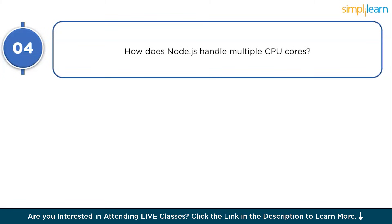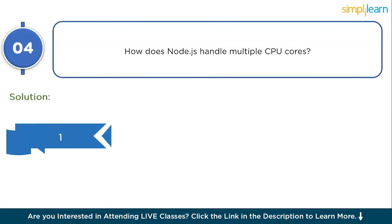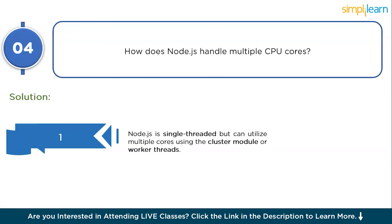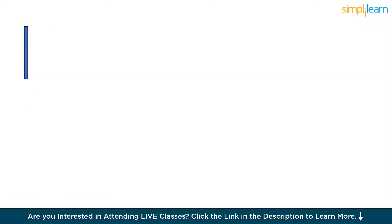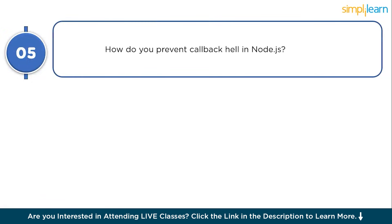Question 4: how does Node.js handle multiple CPU cores? Node.js is single-threaded, meaning it runs on one core by default. To utilize multiple CPU cores we use the cluster module — specifically cluster.fork() to create child processes — and worker threads to execute CPU-intensive tasks.